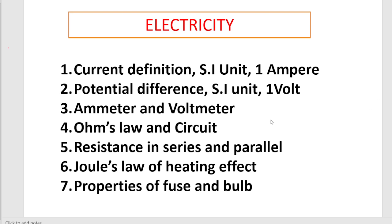First, in the Electricity lesson, the electric current definition is very important. Electric current is defined as the rate of flow of electric charges. Based on this, the SI unit is asked - the SI unit of electric current is Ampere. You should also know how to define one Ampere. So these three things - electric current definition, SI unit, and definition of one Ampere - should be covered.